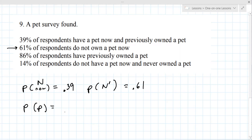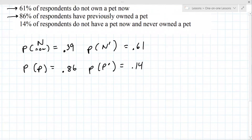Previously owned a pet: 0.86. Probably that they have not previously owned a pet is 0.14. These numbers map together really well, which is unusual. Let's make a Venn diagram to make this clearer.